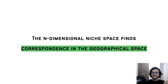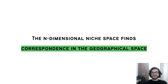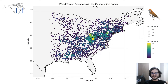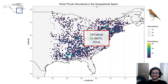The fact is that this theoretical representation has a correspondence in the geographical space, because species are interacting with the environmental variables and with one another in the geographical space. Here we have the data for the same species in the same years with latitude and longitude, and we can clearly see that there's a window in which the species reaches higher abundances than anywhere else. This is, now in the geographical space, the optimum climatic or environmental zone for these species.